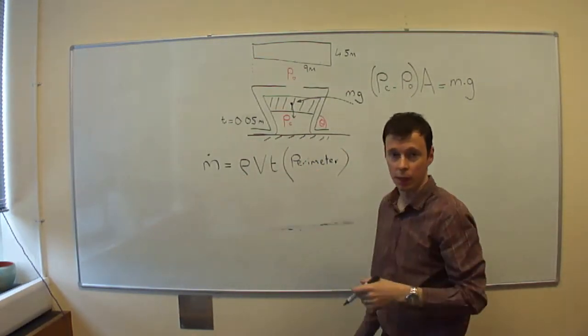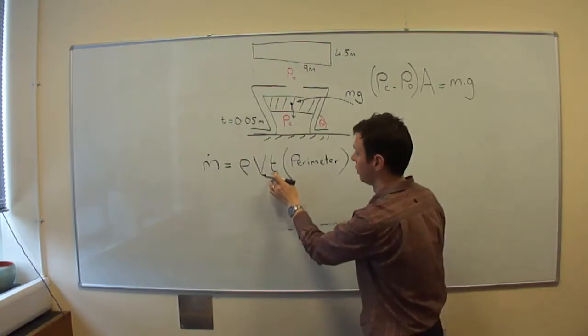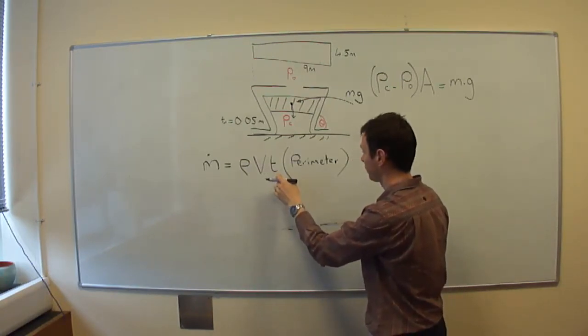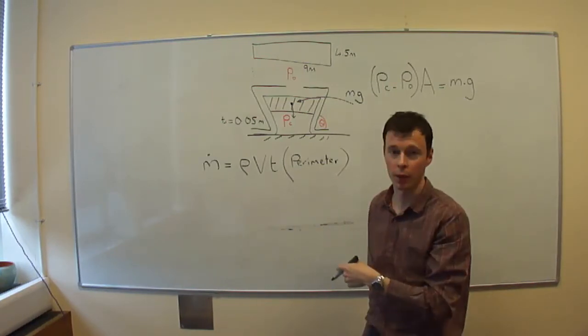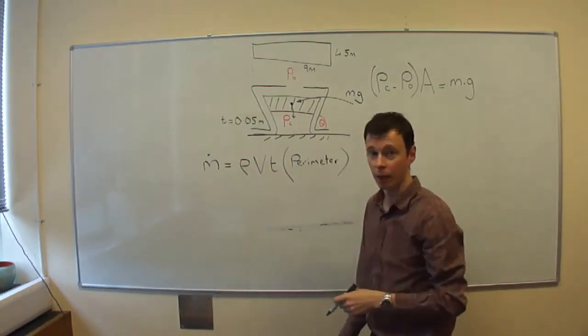If you work this out, this is dimensionally correct. Thickness times the perimeter will give us a length squared term, which makes this balance.